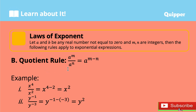The Quotient Rule: If you are to divide 2 exponential expressions that have the same base — that is, a to the power of m divided by a to the power of n — just copy the same base, which is a, then subtract the exponent: m minus n. For example, x to the power of 4 divided by x to the power of 2 — copy the same base x, then subtract the exponent: 4 minus 2, and that equals x squared.